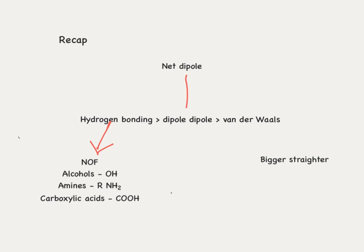To recap: we have three types of intermolecular forces. Hydrogen bonding is the strongest and occurs between nitrogen, oxygen, or fluorine and hydrogen atoms — in alcohols, amines, and carboxylic acids. Dipole-dipole is the next strongest, occurring between molecules with a net dipole. Van der Waals interactions are the weakest — stronger with larger molecules or atoms, and stronger with straighter molecules. And that's all for now — see you next time.